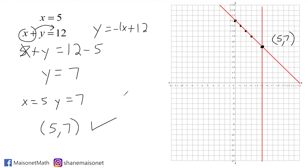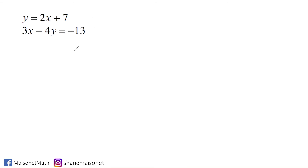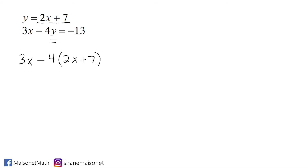For this system, notice that the first equation has y isolated. Whenever you have one of the two equations with an isolated variable, you're going to take what that variable is equal to and substitute it in for that variable in the other equation. So we're going to take the y in the second equation and substitute it with 2x plus 7. We rewrite it as 3x minus 4 times, in parentheses, 2x plus 7, set equal to negative 13. Notice the only variable we have in that equation is x, so we can solve for x.